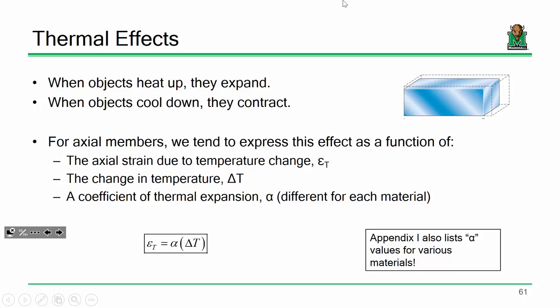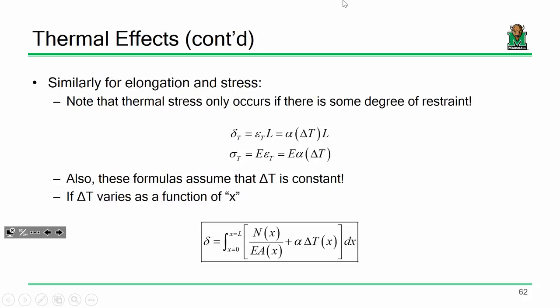Thermal strain and change in temperature are related by the alpha value. Alpha is a material characteristic — you'll have a different alpha value for bronze than for copper or steel. Now, an important point: if I have just a block of steel sitting on a table and I heat it up, it's going to expand, which means it's going to generate a thermal strain. But is it going to generate a thermal stress? No — if it's just sitting there, it's going to expand freely. The thermal stress would be zero.